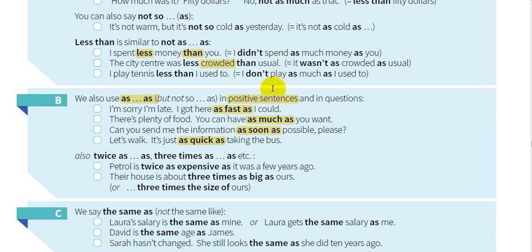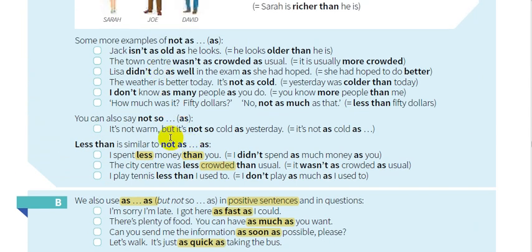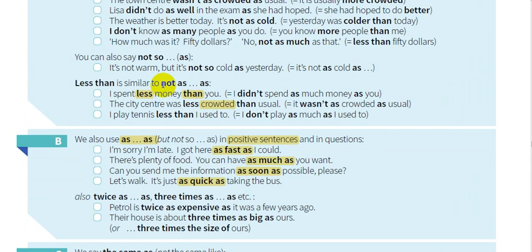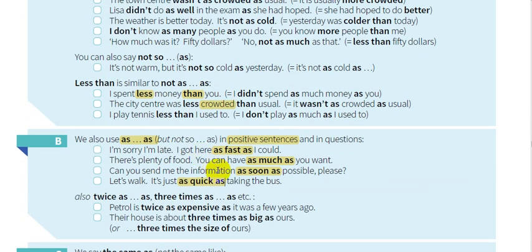This note is very important. The teacher might give you a question in the exam. For example, they give you choices: "I got here as fast as I could" — or instead of "as fast as" they give you "so fast as" or "not so fast as" or "not as fast as". You must choose the correct one. You need to identify: is it "as + adjective + as", "not so + adjective + as", or "not as + adjective + as" — that is the idea.